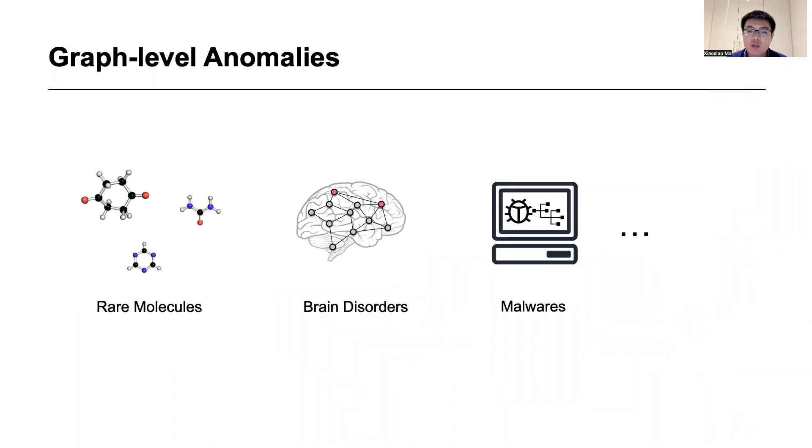In fact, graph anomalies are common occurrences, and detecting them is of great significance, such as identifying rare molecules, diagnosing brain disorders, detecting malware, and more.